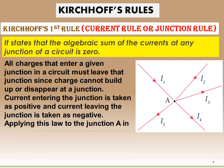All charges that enter a given junction in a circuit must leave that junction, since charge cannot build up or disappear at a junction. Current entering the junction is taken as positive and current leaving the junction is taken as negative. So after usage, we return the current to the same electrical post as negative, and a negative return current will not make any impact on the circuit.